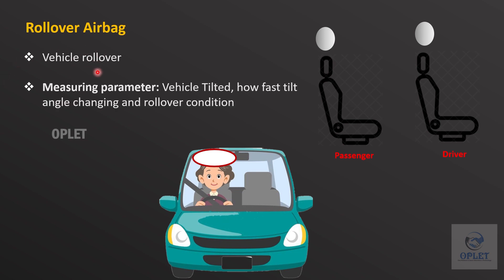The rollover sensor is a little more complex than a normal crash sensor. Electronic rollover sensors provide additional protection by measuring whether the vehicle is tilted, how fast the tilt angle is changing, and the rollover condition. An inclinometer along with gyroscopes is designed to measure lateral and vertical acceleration, roll rate, and tilt angle. The detailed information on all sensors is explained in the previous video — the link is given in the description box.